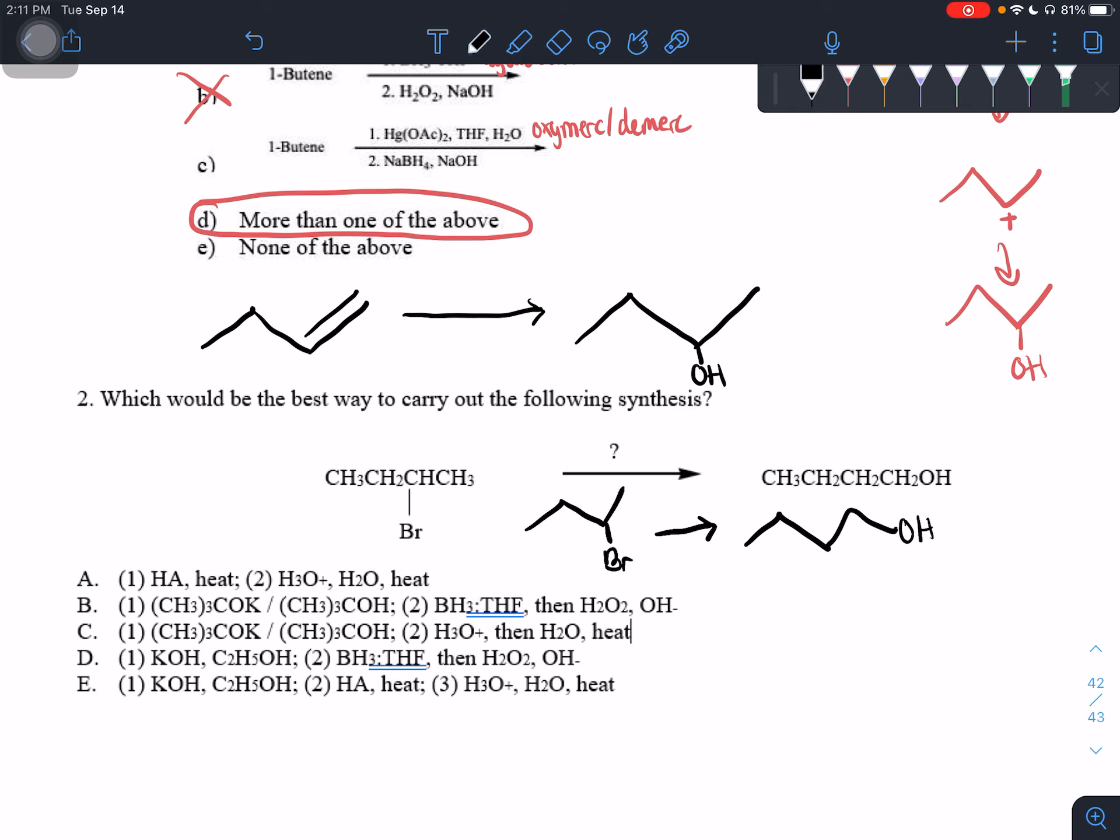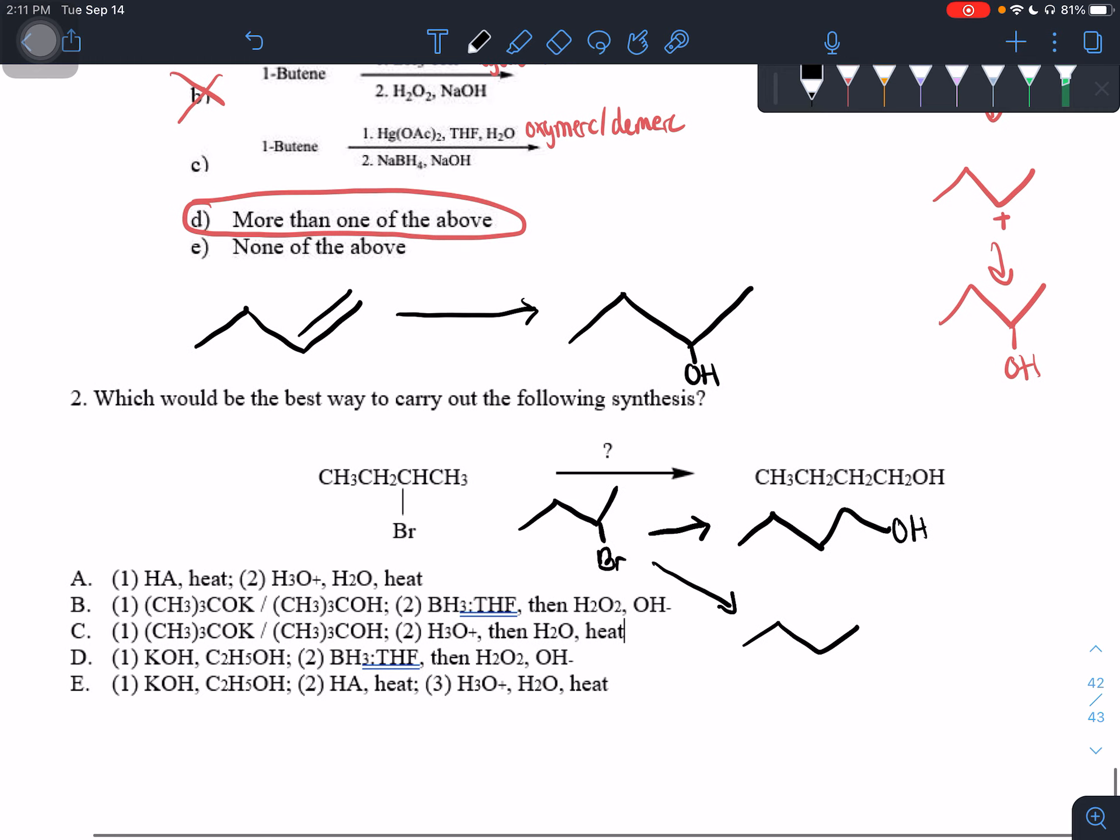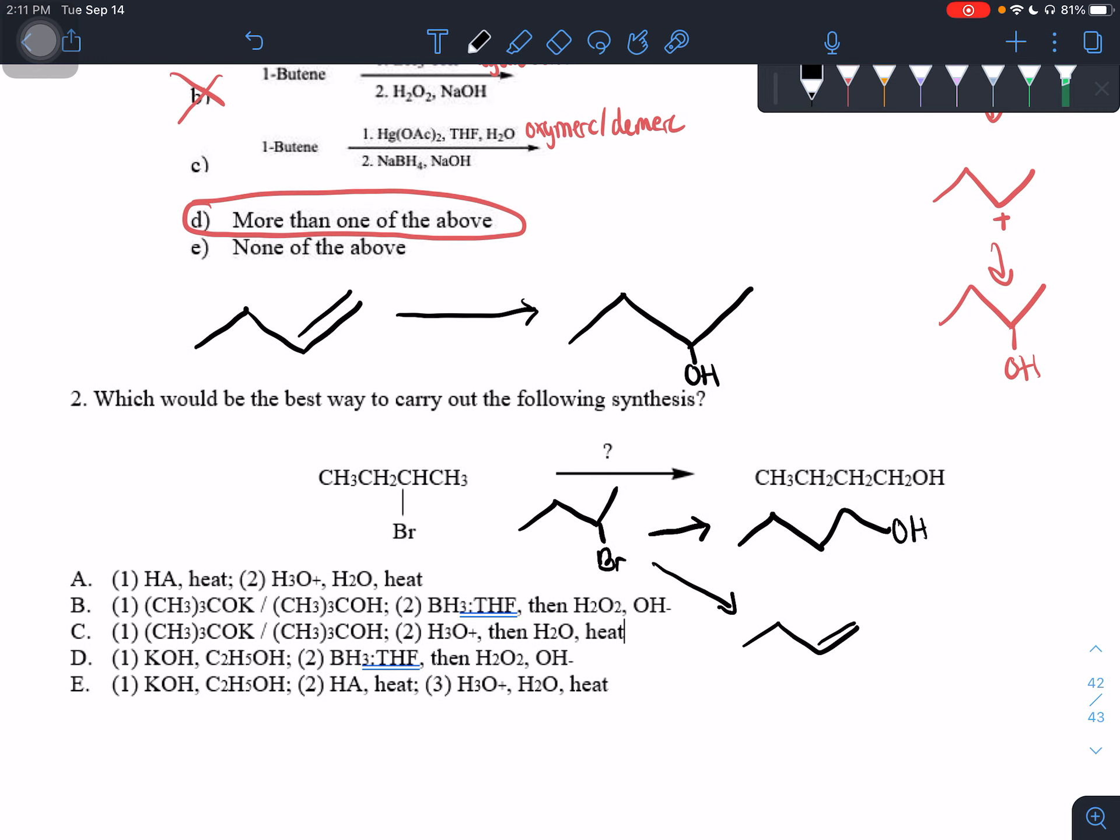Because we first need to eliminate our bromine. So then we form a double bond and then we need to add on our alcohol. So let's say we take off the bromine, right? And we add our double bond. Actually, we need to take this step back. Sorry. Okay. So where do we want the alcohol to be added to? This carbon, right? So when we're forming our double bond, would we want to form the double bond between this carbon and this carbon to the left or this carbon and the carbon to the right?